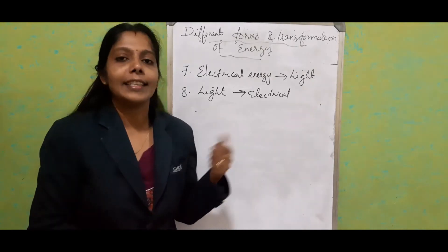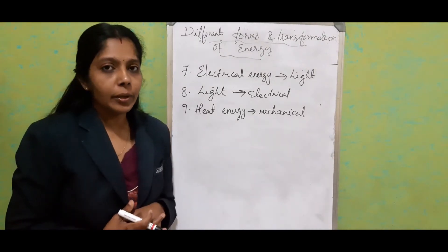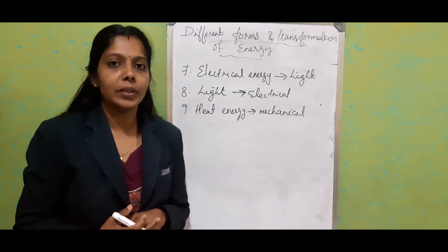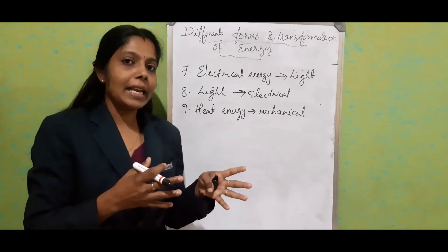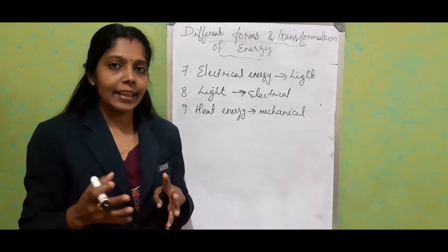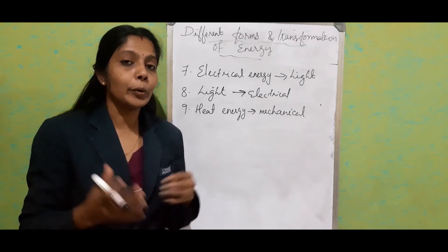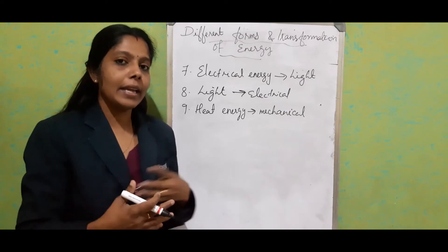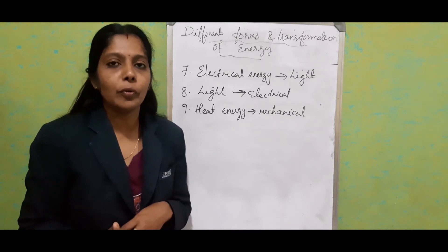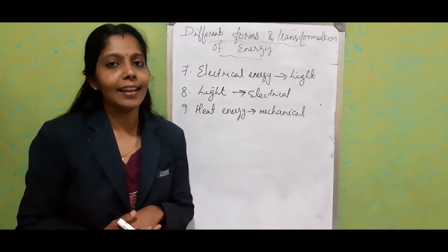Next: heat energy to mechanical energy. You know how a heat engine works. Chemical energy stored in coal is converted into heat energy. When it burns, it produces steam. With the help of that steam or heat energy, the engine starts moving. So, heat energy is being converted into mechanical energy.